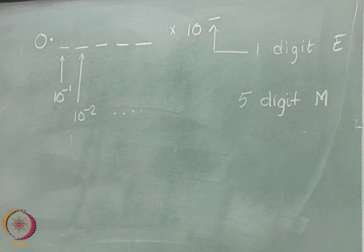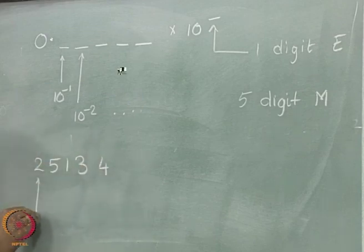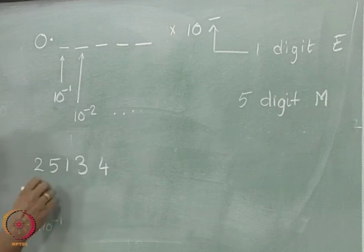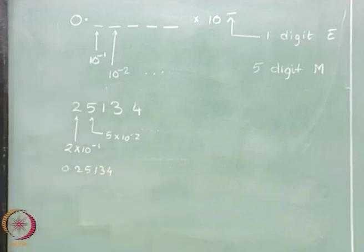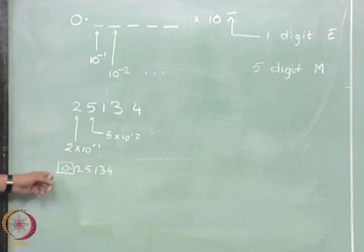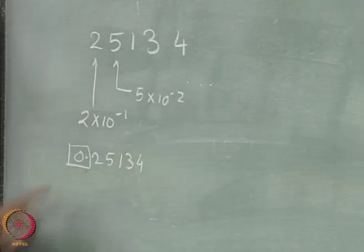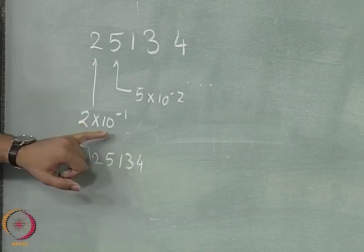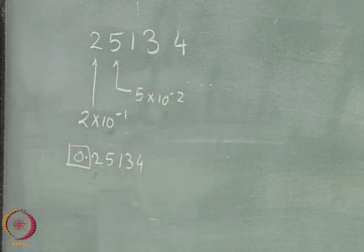When we have the 5-digit representation 2, 5, 1, 3, 4, this actually means 2 multiplied by 10 to the power minus 1, plus 5 multiplied by 10 to the power minus 2, and so on, which gives us 0.25134. Our decimal computer is not going to waste any space representing the leading '0 dot' — it only stores the 5 significant digits.